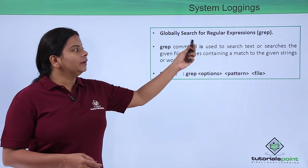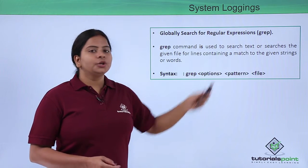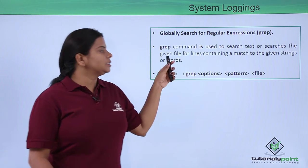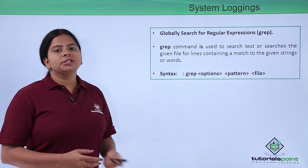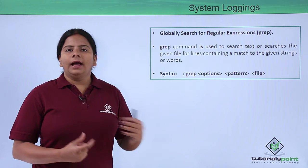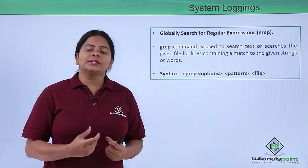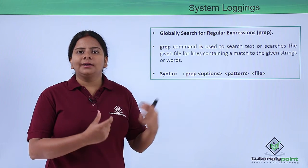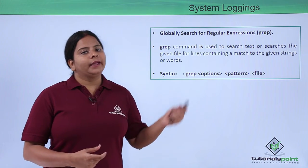The grep command is generally used to globally search for regular expressions. It is used to search particular text completely into the Linux operating system, or you can search a given file for lines matching your strings or words. For example, if I want to search for a particular string in my file, grep can also be used to search for files starting with a particular word, like test one, test two, or test three.